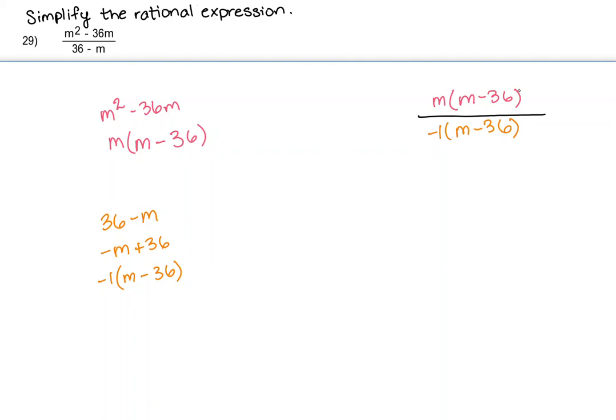We can easily see that we can cancel out the factor of m minus 36 on the top and the m minus 36 on the bottom. And that leaves us with just m over negative 1, which turns into just negative m. So the simplified version of the rational expression is negative m.